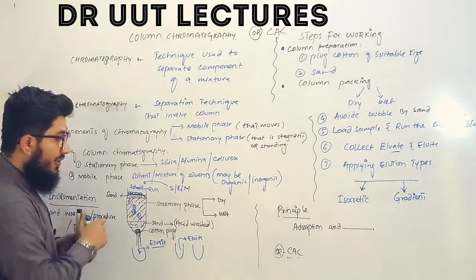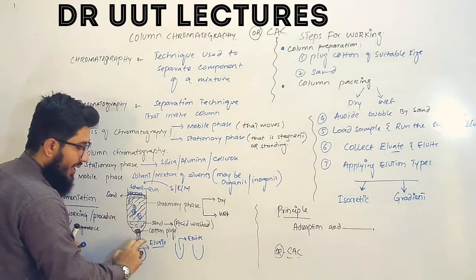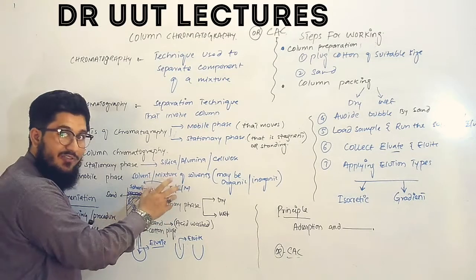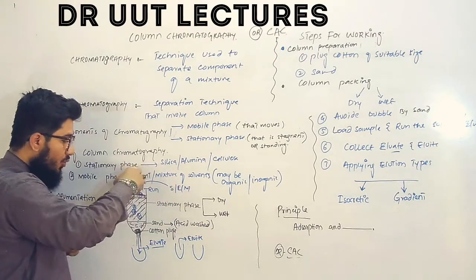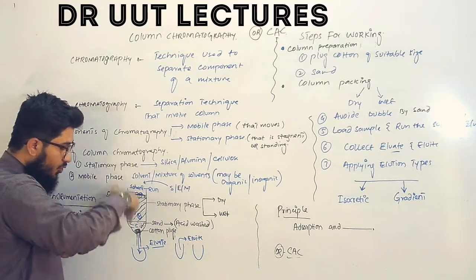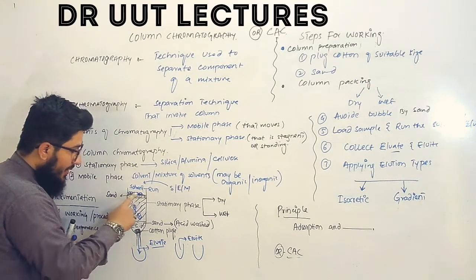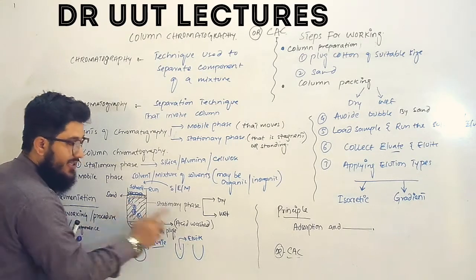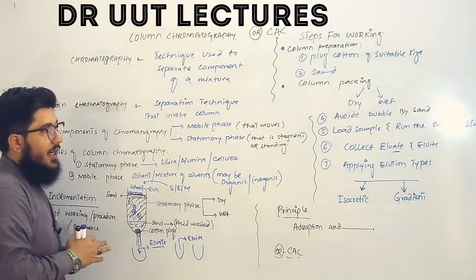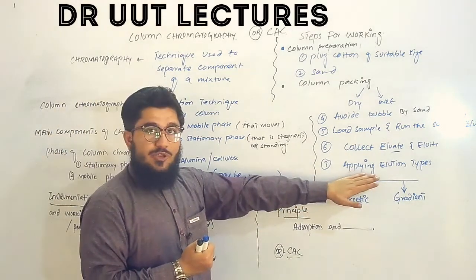Three important terms to remember: eluent is the solvent or mobile phase you run through the column; eluate is the mobile phase after it has moved through the column; and the separated sample components that move out from the column are collected as fractions.